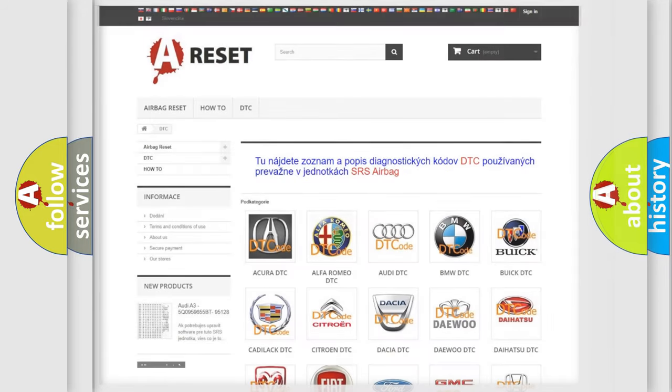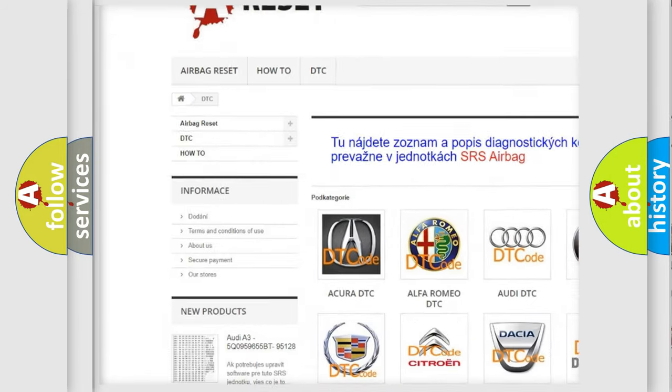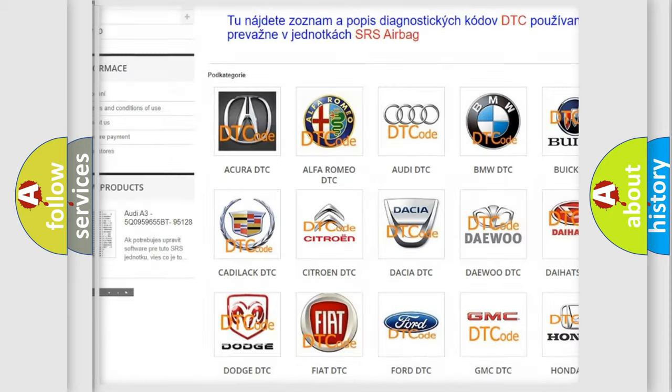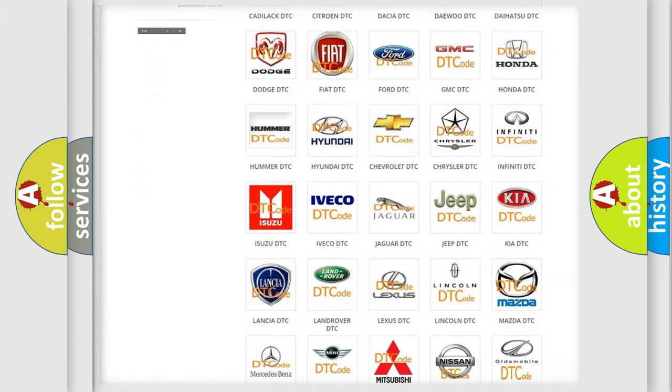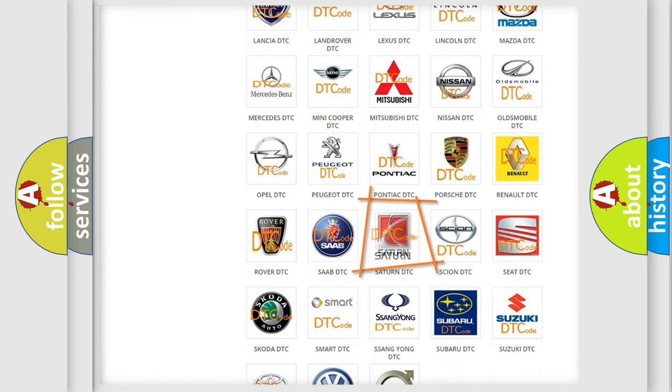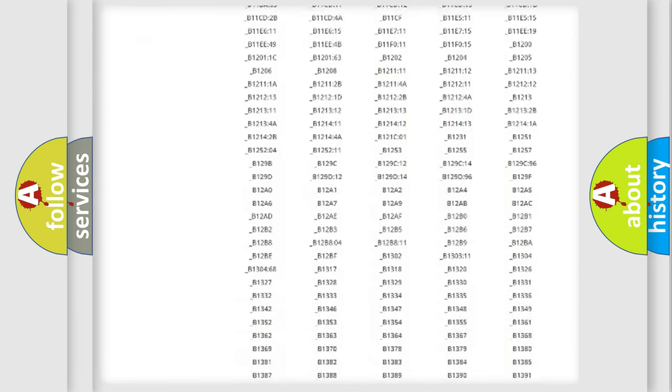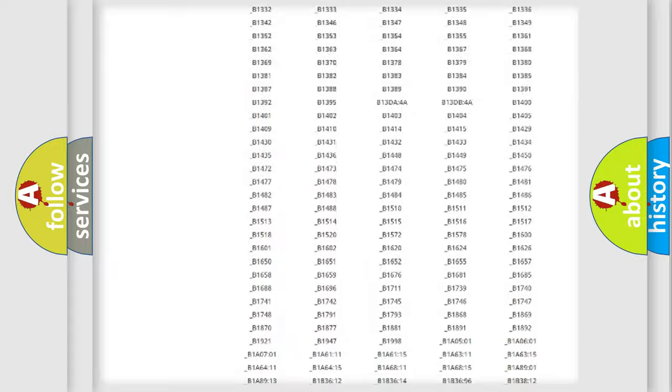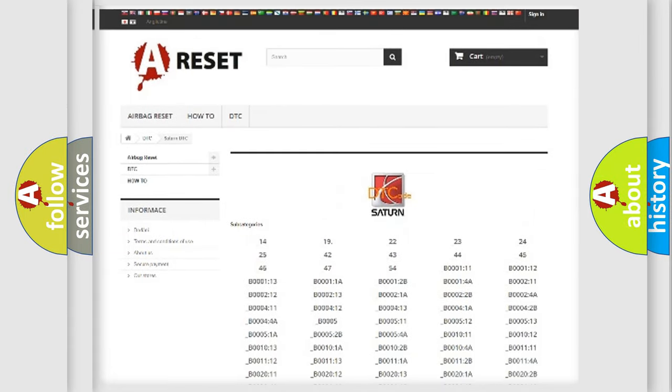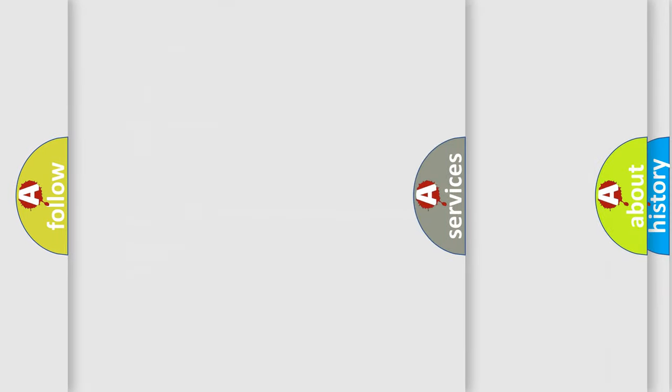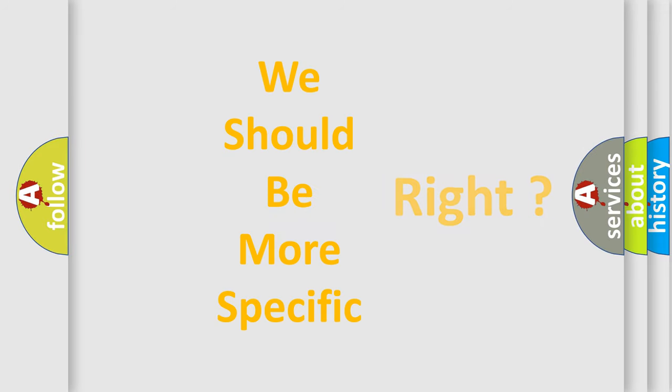Our website airbagreset.sk produces useful videos for you. You do not have to go through the OBD2 protocol anymore to know how to troubleshoot any car breakdown. You will find all the diagnostic codes that can be diagnosed in Saturn vehicles, and many other useful things. The following demonstration will help you look into the world of software for car control units.